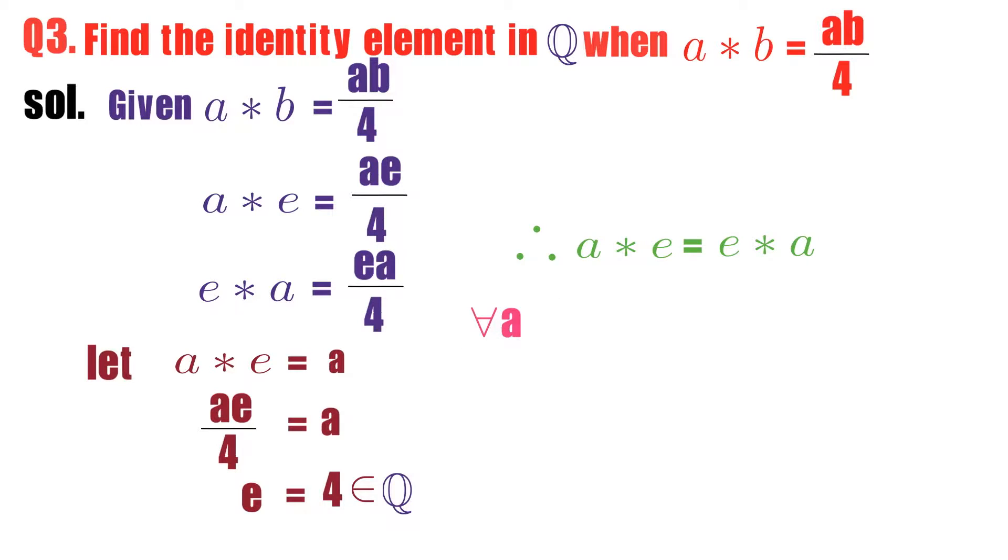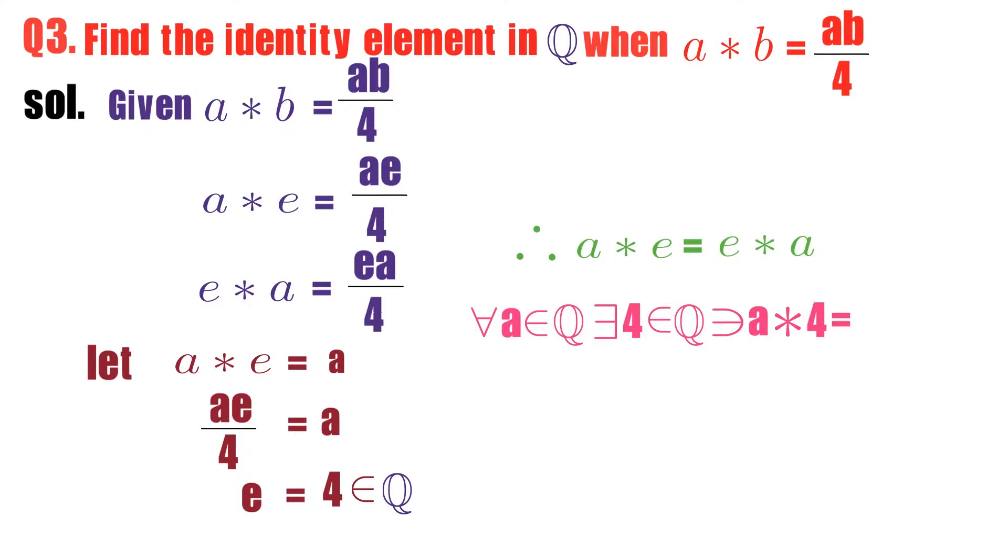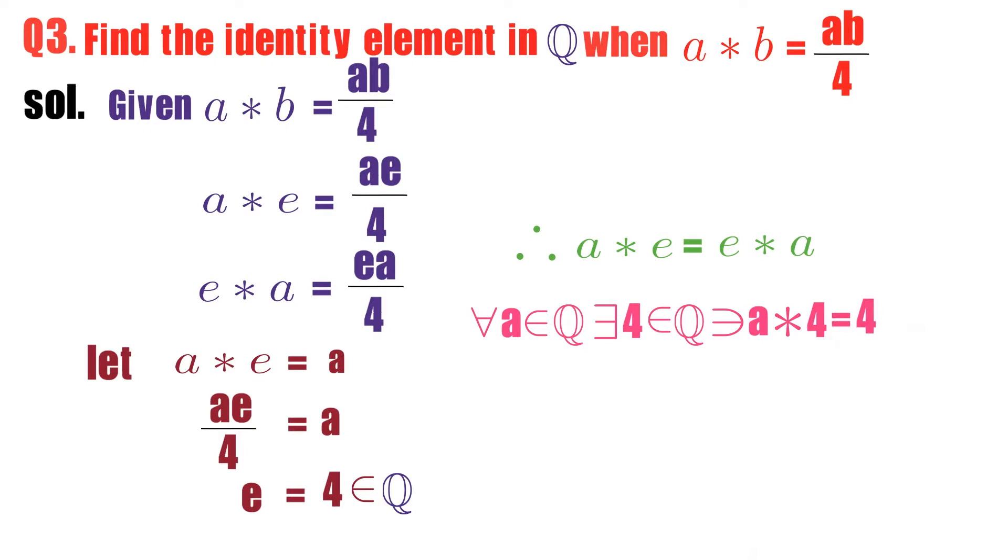So what you got? For any a in Q, for any a belongs to Q, there exists 4. What is 4? 4 is a rational number. For any a belongs to Q, there exists 4 belongs to Q such that a star 4. You can calculate a star 4. You will get a only. A star 4 equals to 4 star a equal to a.